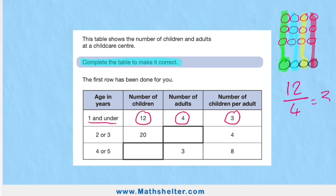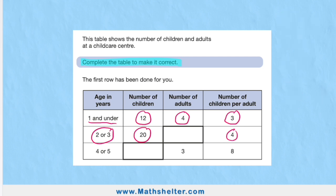In the two-or-three category, we have twenty children and there are four children per adult. Now we need to work out how many adults. If we can see that there are four children per adult and there's 20 children, then all I need to do is 20 divided by my four equals five. So I have five adults. Let's check that—if I have my four times five, I get 20. Good.